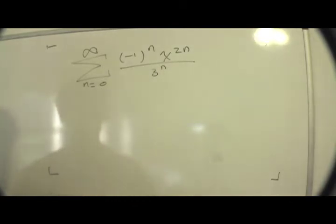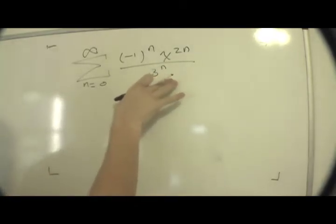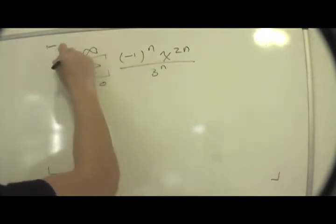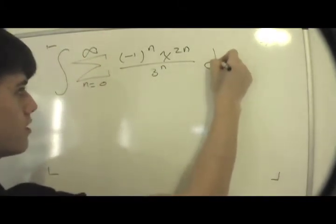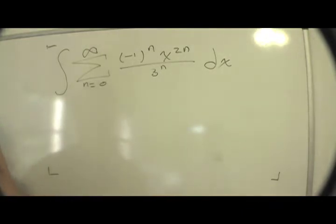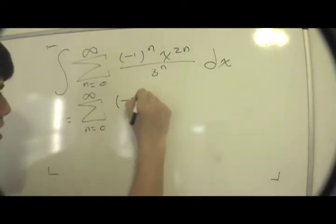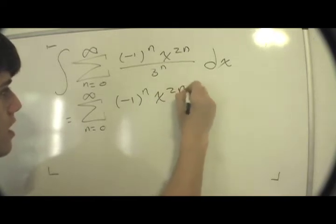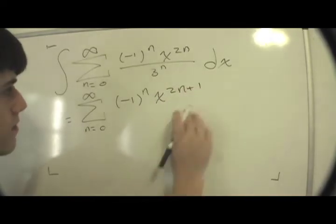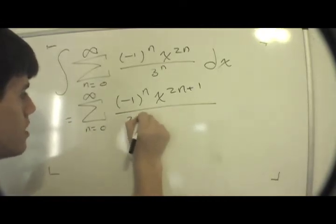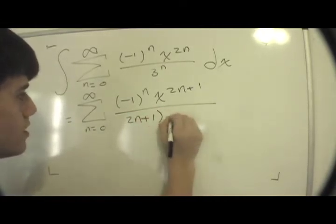So the next thing I'm going to do is take this original sum and integrate. So you guys should know the integral of the sum is the sum of the integrals. Take this thing to the inside, integrate this. This thing is the sum from n equals 0 to infinity of minus 1 to the n, x to the 2n plus 1 divided by 2n plus 1 times 3 to the n.